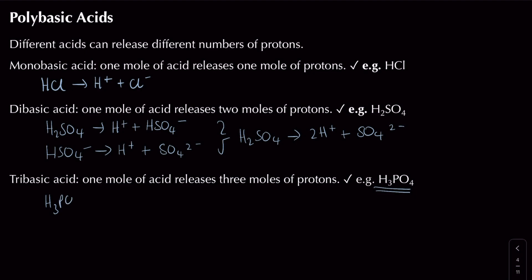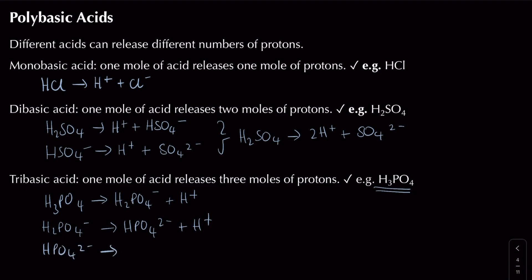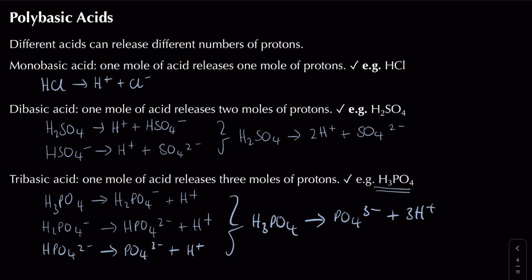Similarly, phosphoric acid H₃PO₄ is tribasic and dissociates in three stages: H₃PO₄ → H⁺ + H₂PO₄⁻, then H₂PO₄⁻ → H⁺ + HPO₄²⁻, then HPO₄²⁻ → H⁺ + PO₄³⁻. The overall simplified equation is H₃PO₄ → PO₄³⁻ + 3H⁺, but remember it happens one proton at a time.